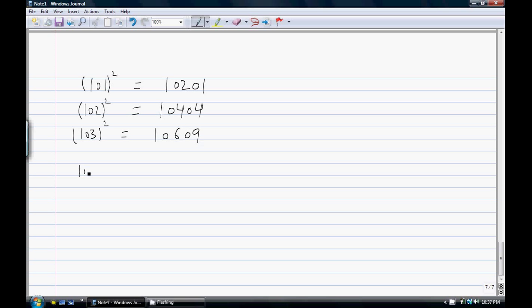107 square is equal to 7 times 14, so 114, and 7 times 7 is 49. So how do I come up with this formula?